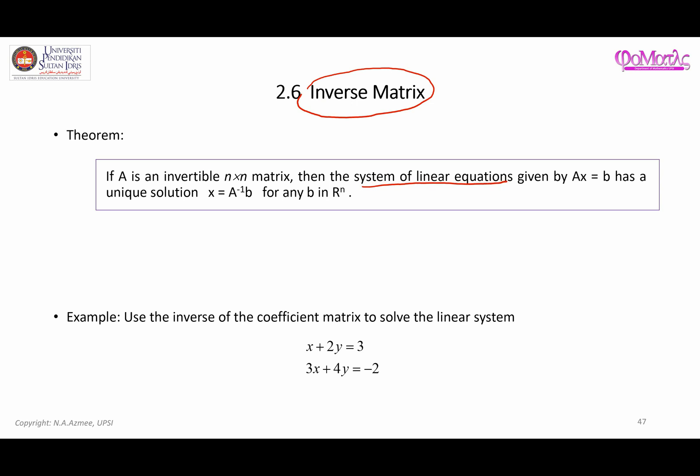Recall that whenever you have a system of linear equations, you can always represent it in terms of matrices equation. Here is matrix A, which contains all the coefficients for the unknown variables. Here is a column vector, column matrix X, which contains all the unknown variables. And on the right-hand side here is B matrix or vector B. Mathematically, it can be represented as Ax equals B.